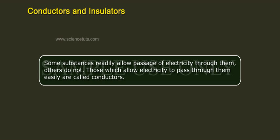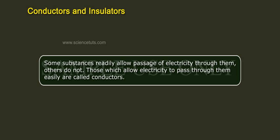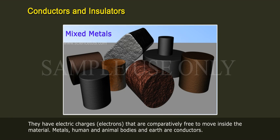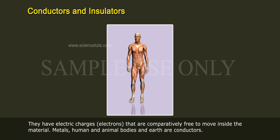Some substances readily allow passage of electricity through them; others do not. Those which allow electricity to pass through them easily are called conductors. They have electric charges — electrons — that are comparatively free to move inside the material.